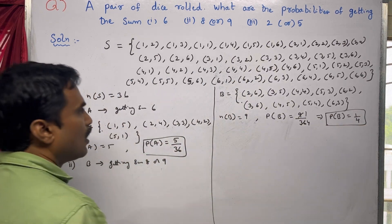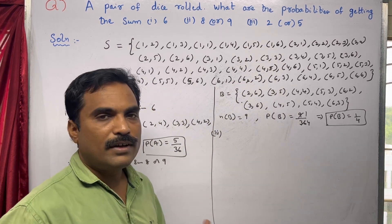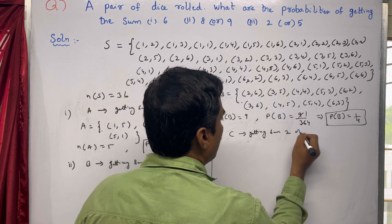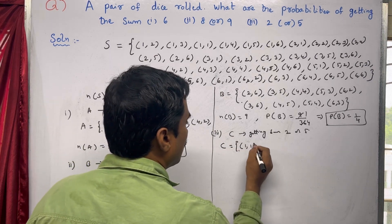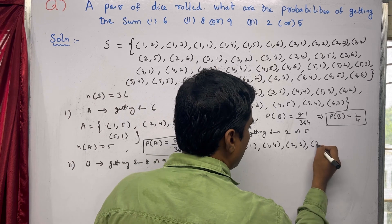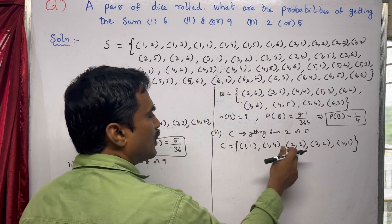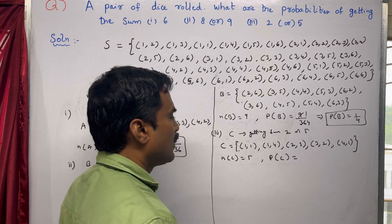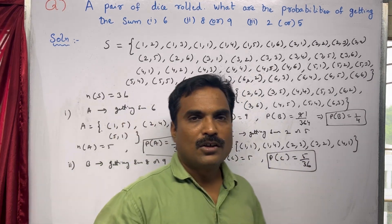Now for the third one, we define event C as getting a sum of 2 or 5. For sum 2: (1,1). For sum 5: (1,4), (2,3), (3,2), (4,1). So n of C equals 5. Therefore P of C equals 5 by 36. So the third answer is also completed.